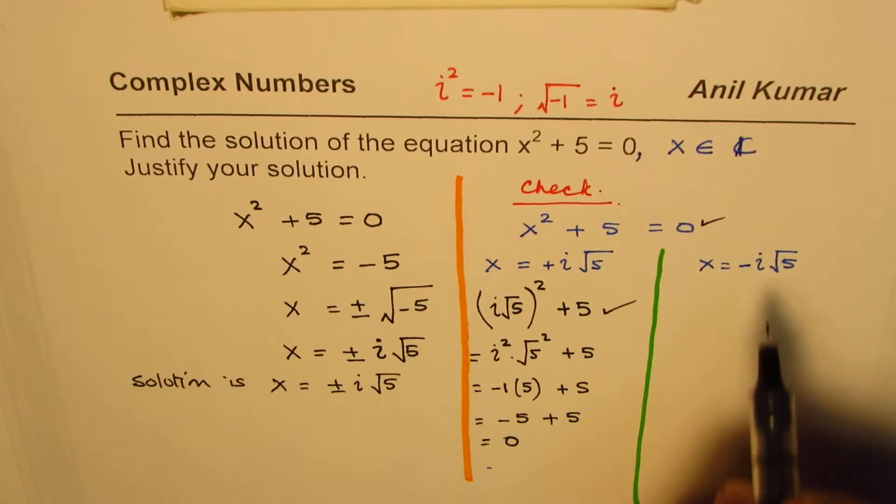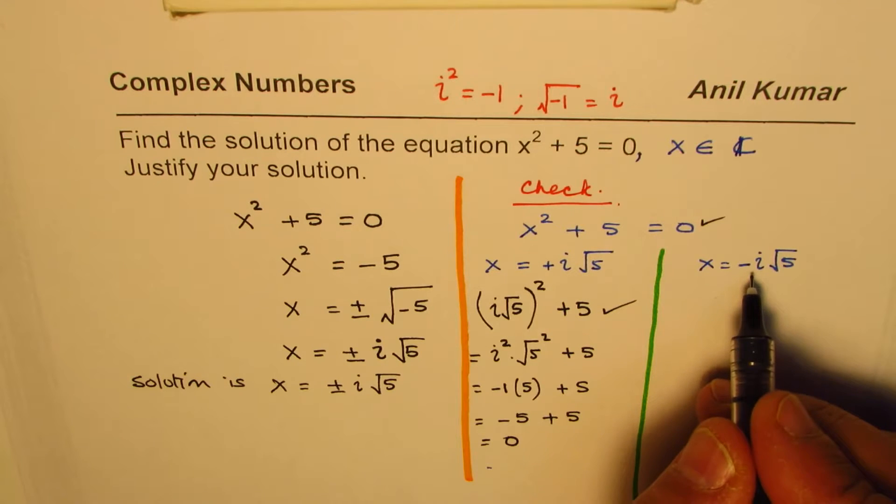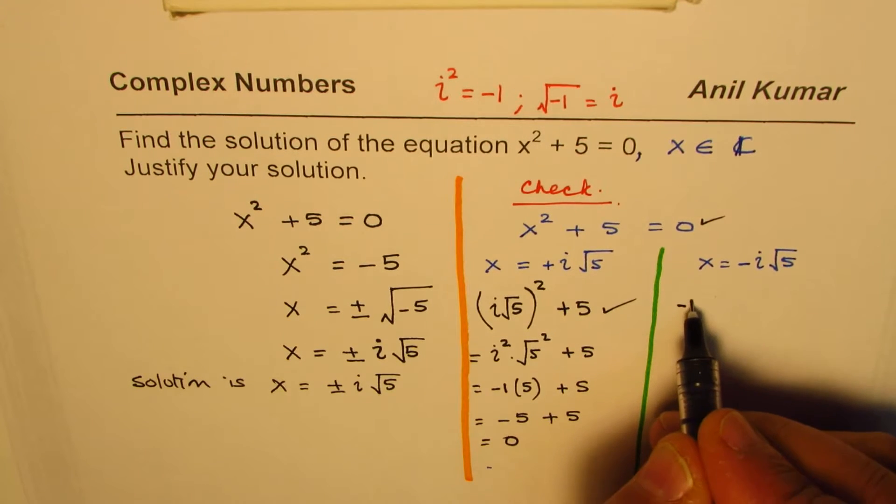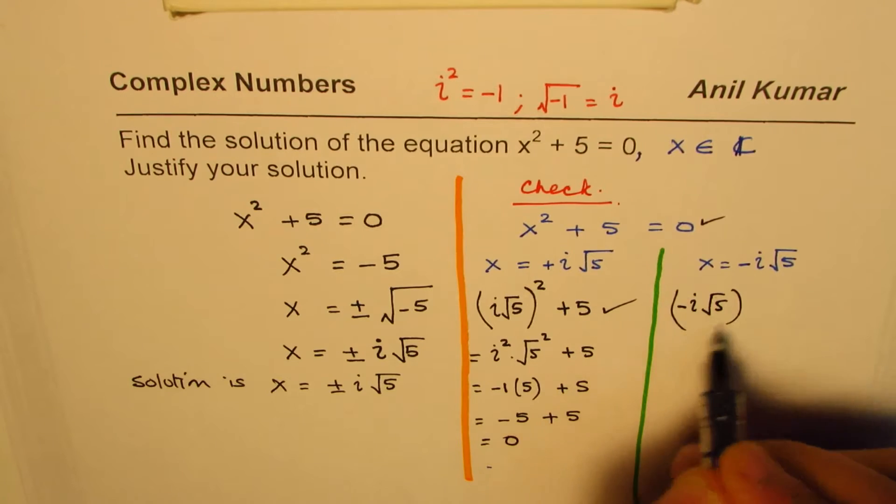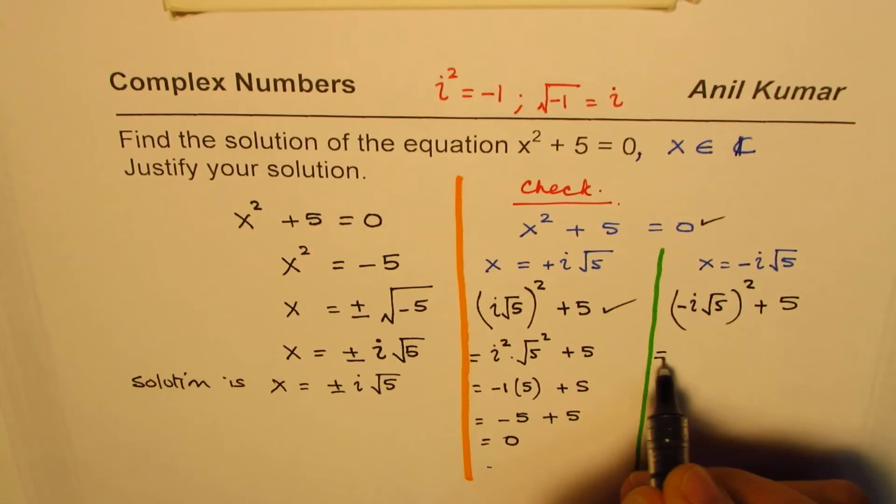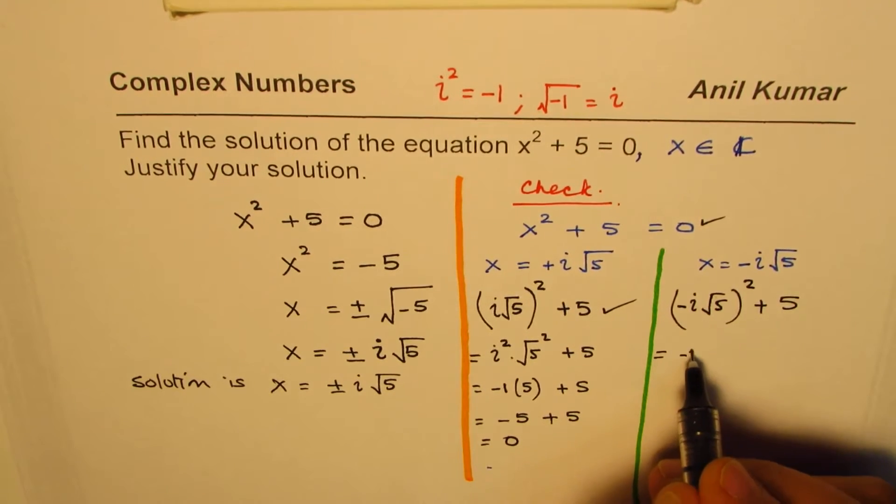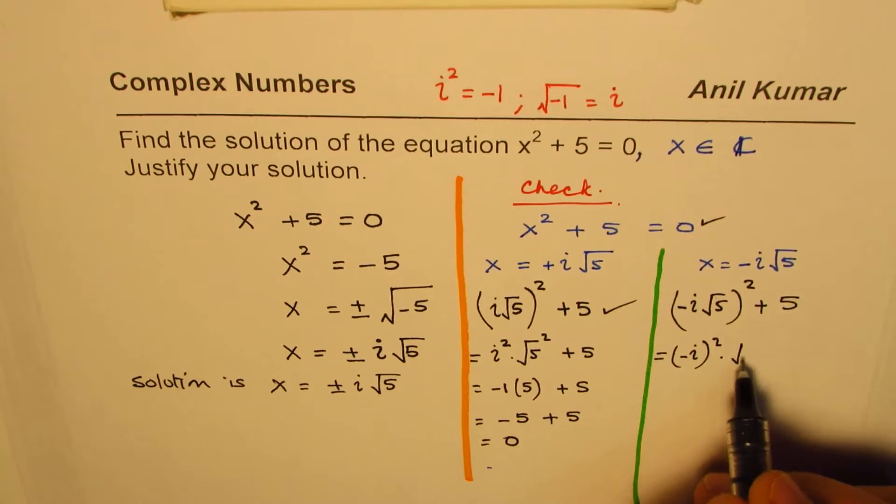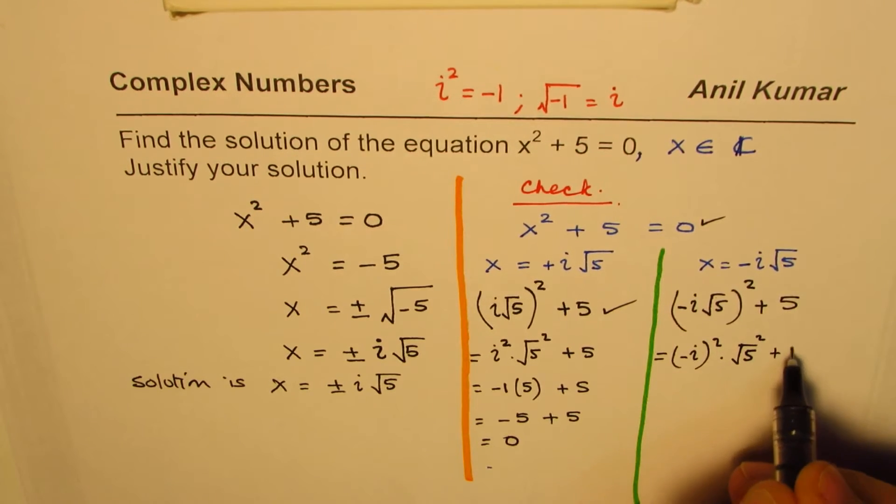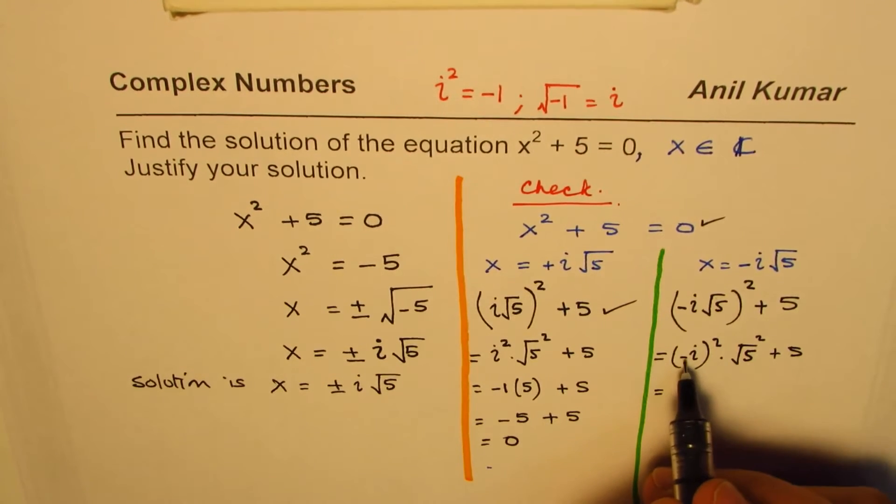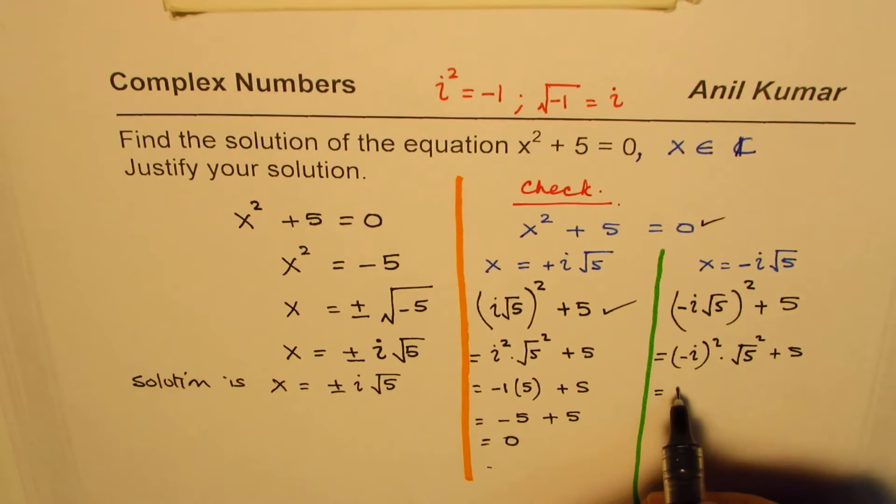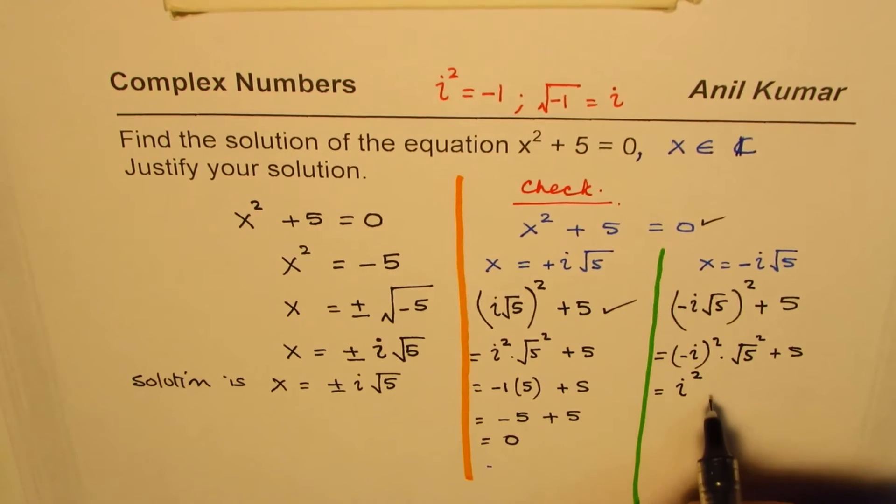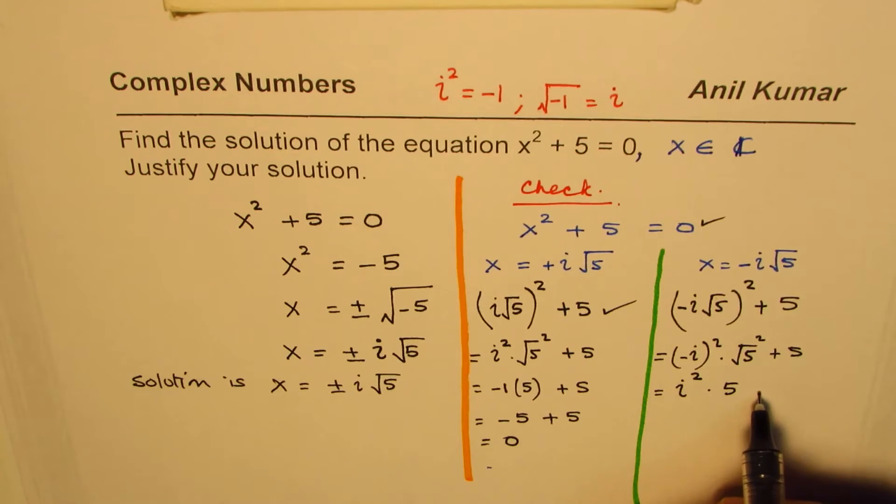Let's try it with the -i√5 now. So if I substitute -i, I get (-i√5)² + 5. Now that gives me (-i)² times (√5)² plus 5. Now, the square of negative is positive, so we get this as i² times 5 plus 5.